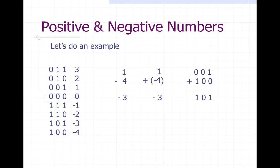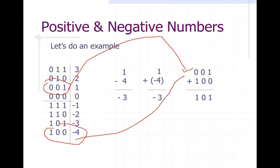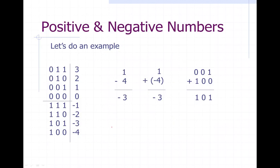One, look at our number table, is zero-zero-one, so we'll put that there. And negative four is here, so we'll put it there. Once we add these two numbers together we get one-zero-one, and one-zero-one — looking back at our number system — is actually equal to negative three. So we have a match in this number system.